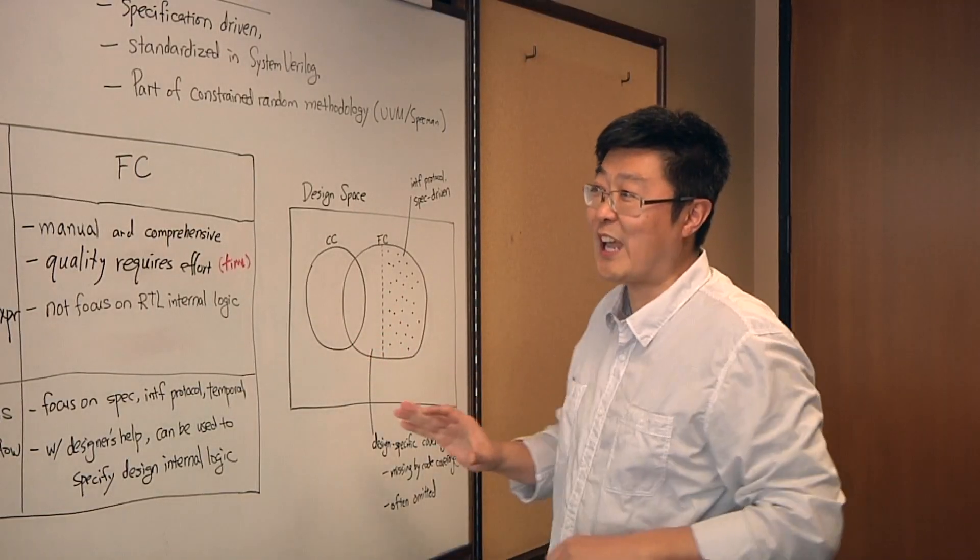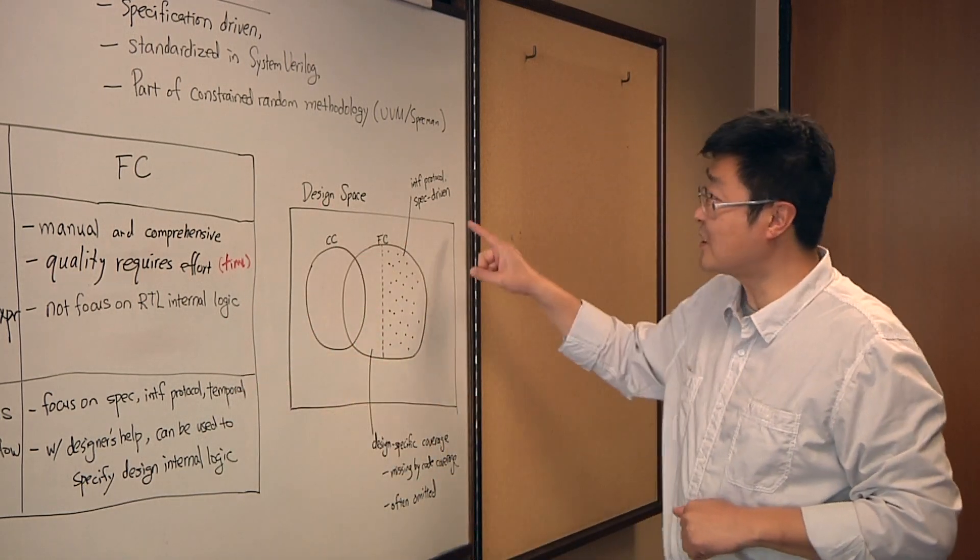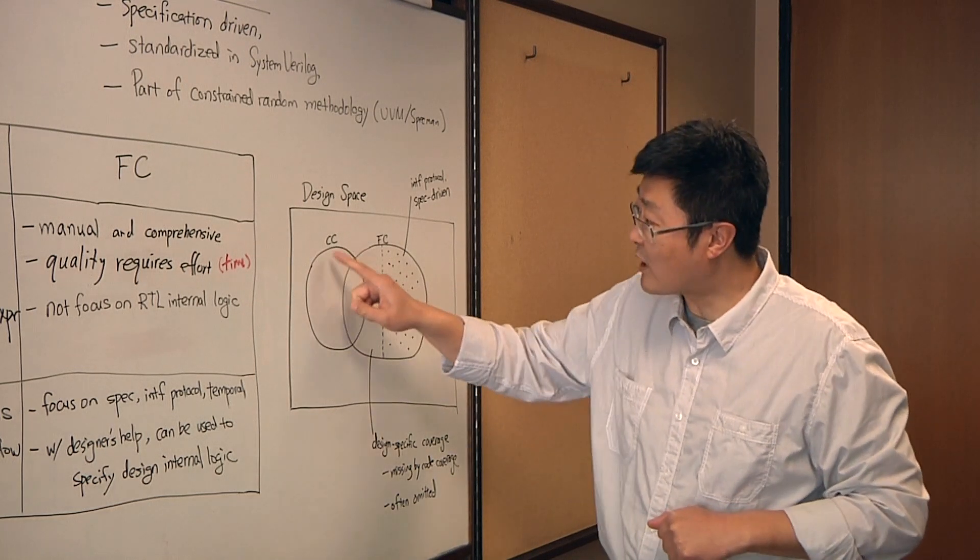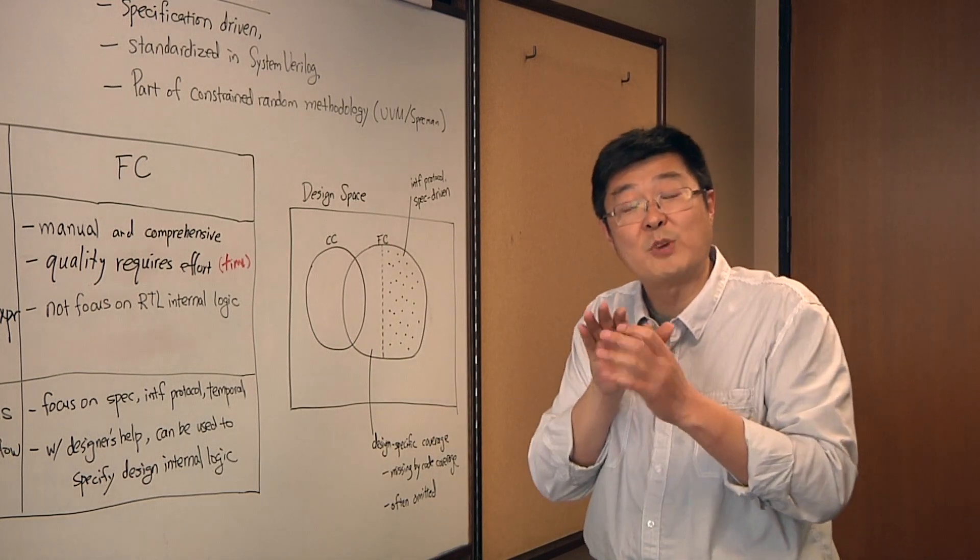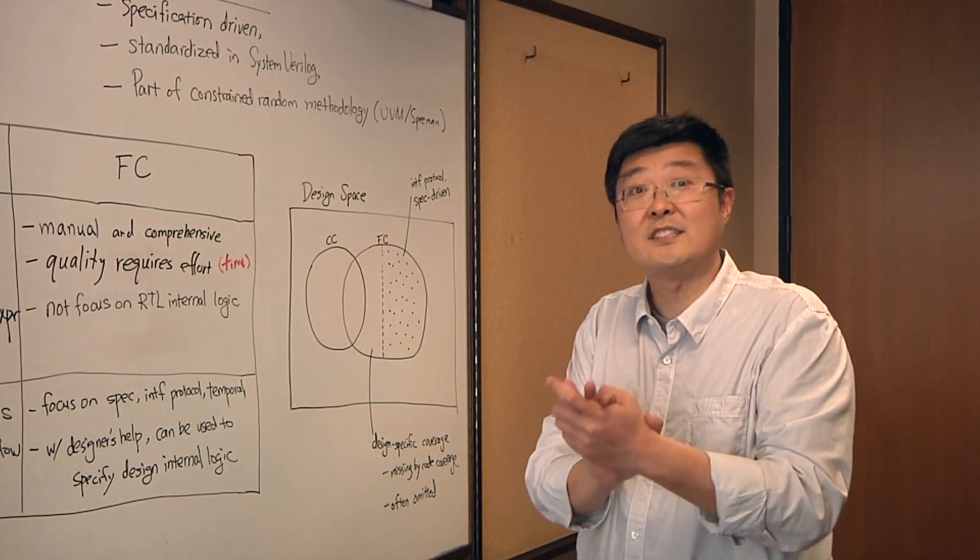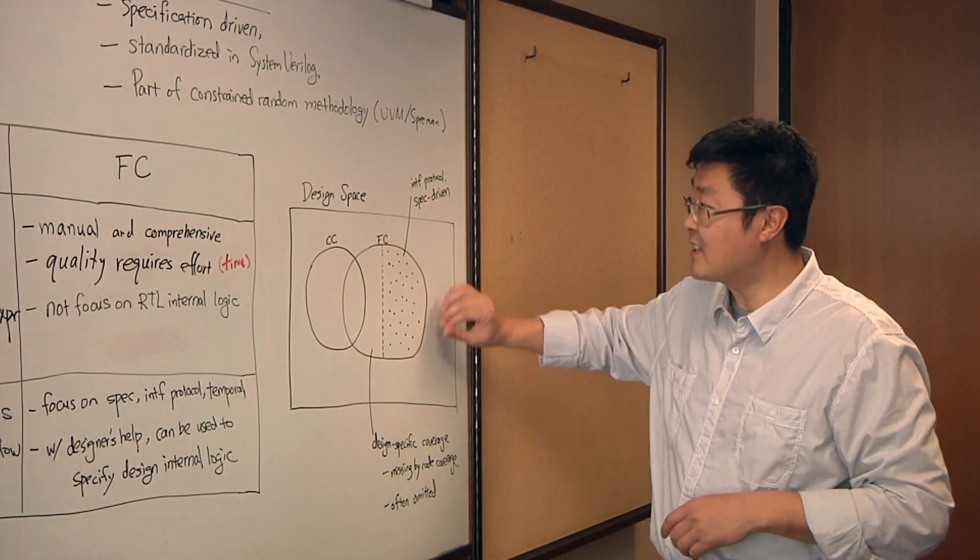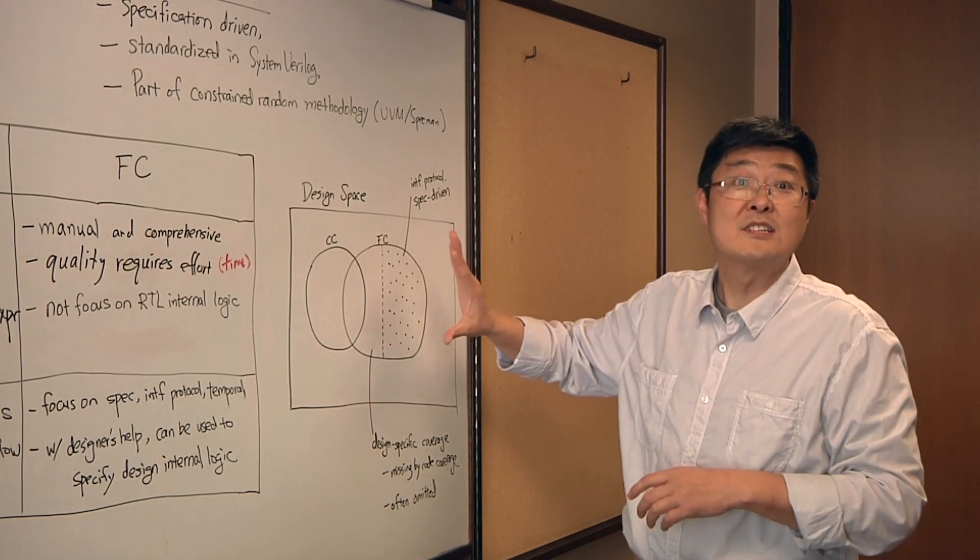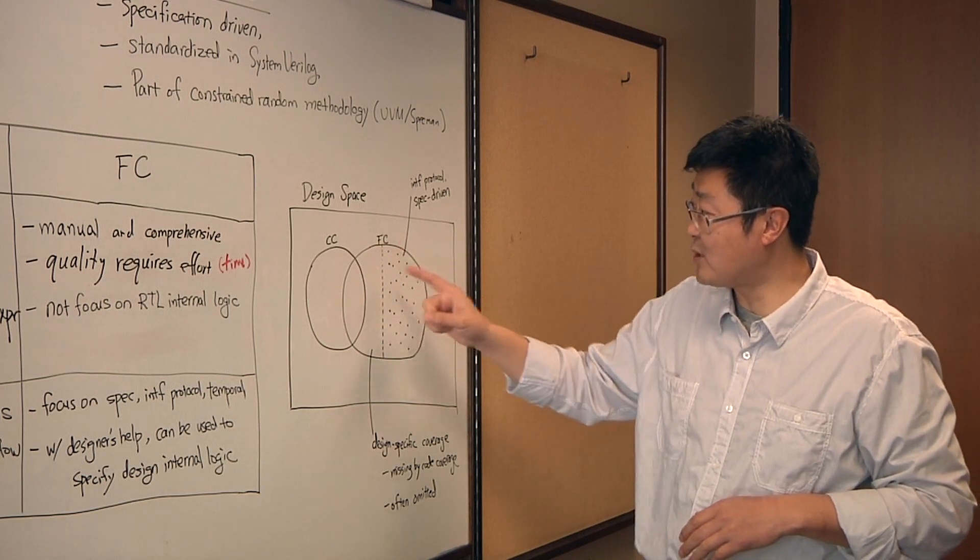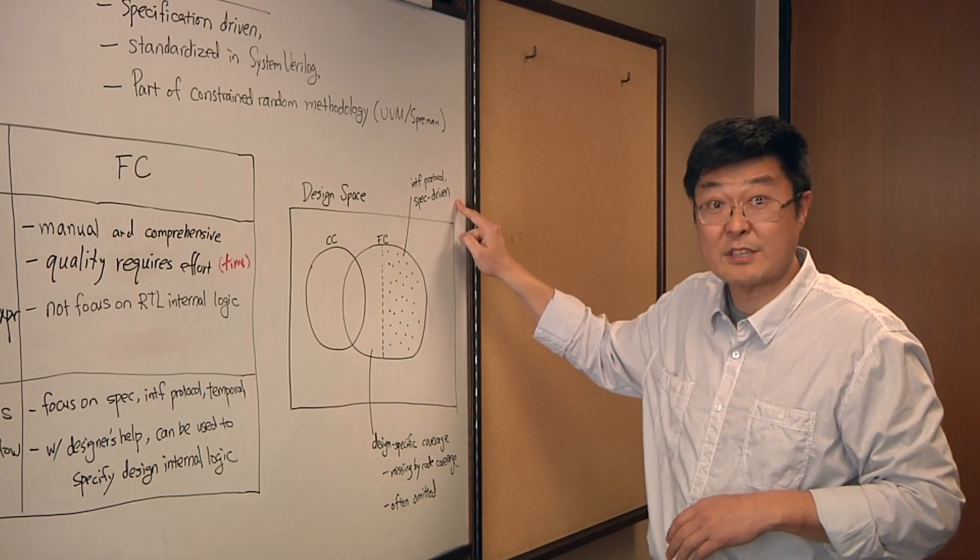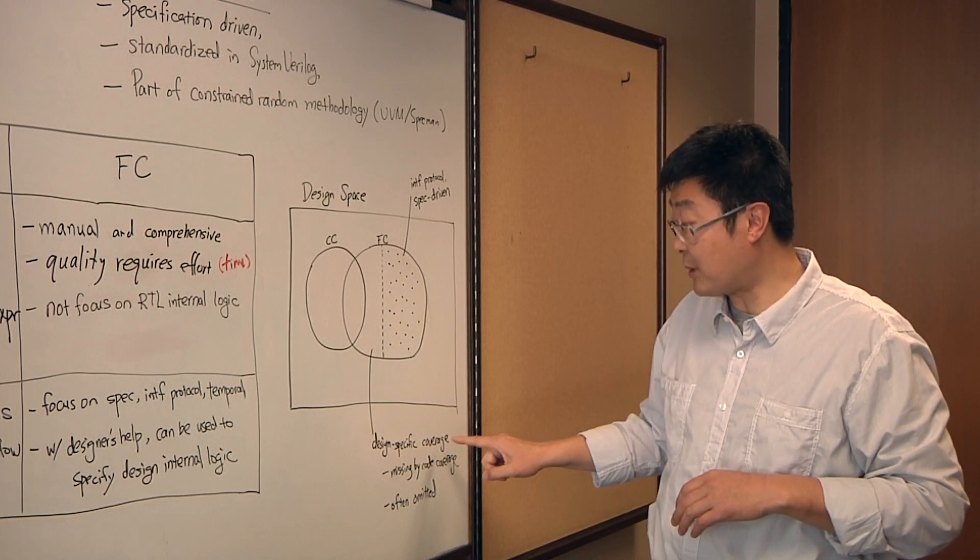I'll use the graph to capture the relation between these two different approaches. I draw a rectangle to represent design space. Code coverage will describe part of the design space, which is much more relevant to the design details, the signal details. Functional coverage, on the other hand, will describe another space within design space with respect to the specification. I partition the functional space into two parts. One part is the interface protocol, specification driven. At the same time, there is the design specification, the specific properties or coverages.